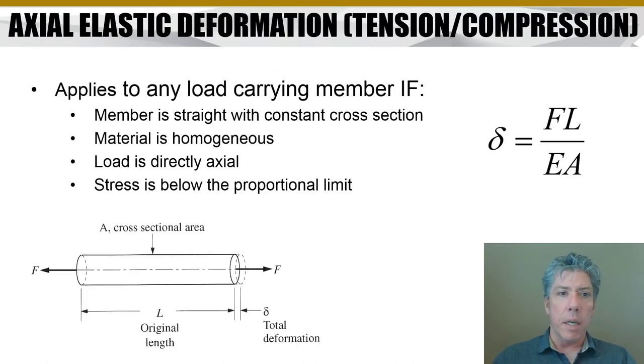What we're going to study will apply to any load carrying member if the member is straight with constant cross-section. The equation on the right is what we're considering. The material is homogeneous, uniform throughout. The load has to be directly axial, it can't be offset to one side. And the stress has to be below the proportional limit. In other words, the material has to be behaving as a linear spring.